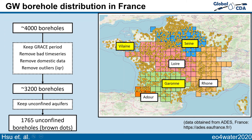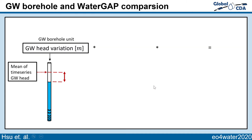Here I will show you the groundwater borehole distribution in France. We want to keep the unconfined aquifer since it has stronger natural variations, so in the end we only have 1,765 unconfined groundwater boreholes, as you can see here. I will only show the results from three of these basins.